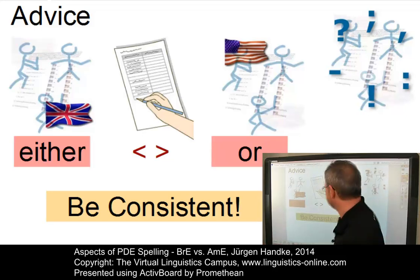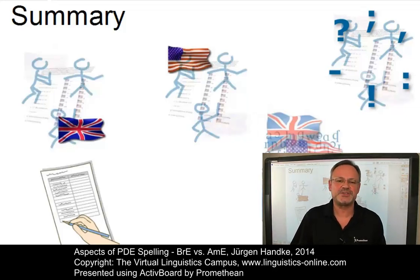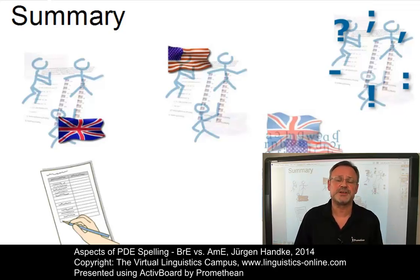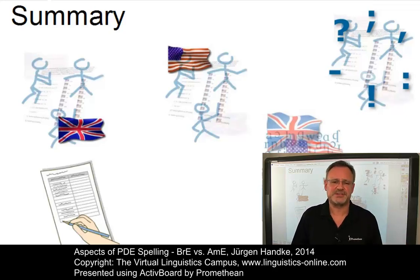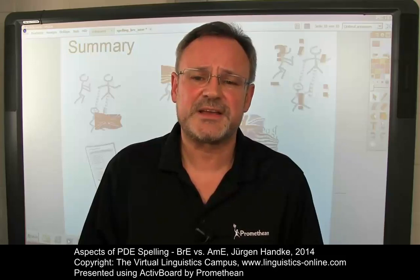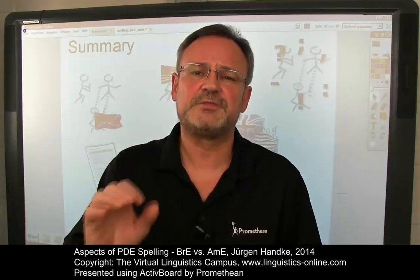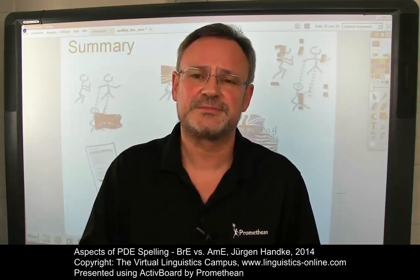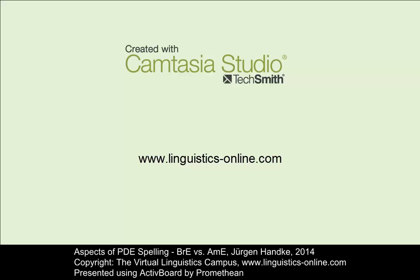Let's summarize. The focus of this e-lecture was a discussion of the central orthographical contexts where British English and American English orthography differ. We saw that these contexts can be grouped into simple vowels and vowel clusters, endings, and some special cases. I hope the examples I gave you were informative enough to support my advice: do not mix orthographical versions of present-day English. Thanks for your attention.